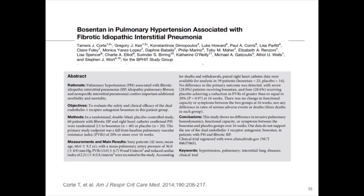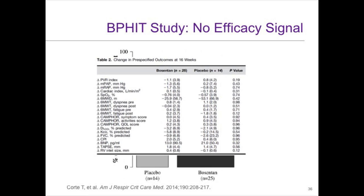A more sobering study was the study of Bosentan in PH associated with fibrotic interstitial pneumonias from Ethel Wells' group — a multi-center study published in the Blue Journal. This was a totally negative study, and the Blue Journal chose to publish it, which I think is a good thing. They chose a hemodynamic endpoint in terms of PVR and there was no difference. If you look at all the secondary endpoints, there wasn't even a signal of anything positive — not even one approaching statistical significance. So this was outright a negative study.